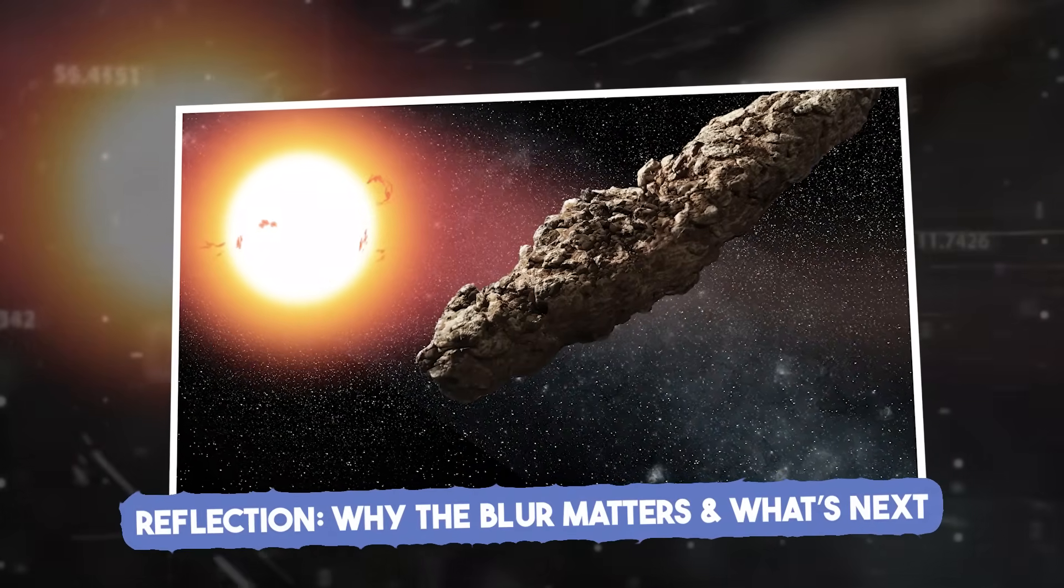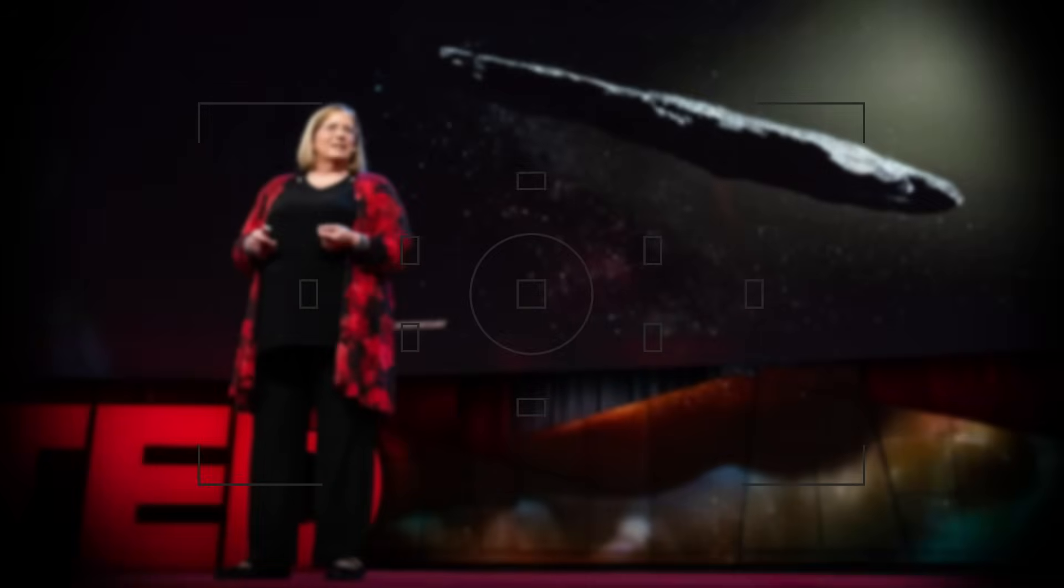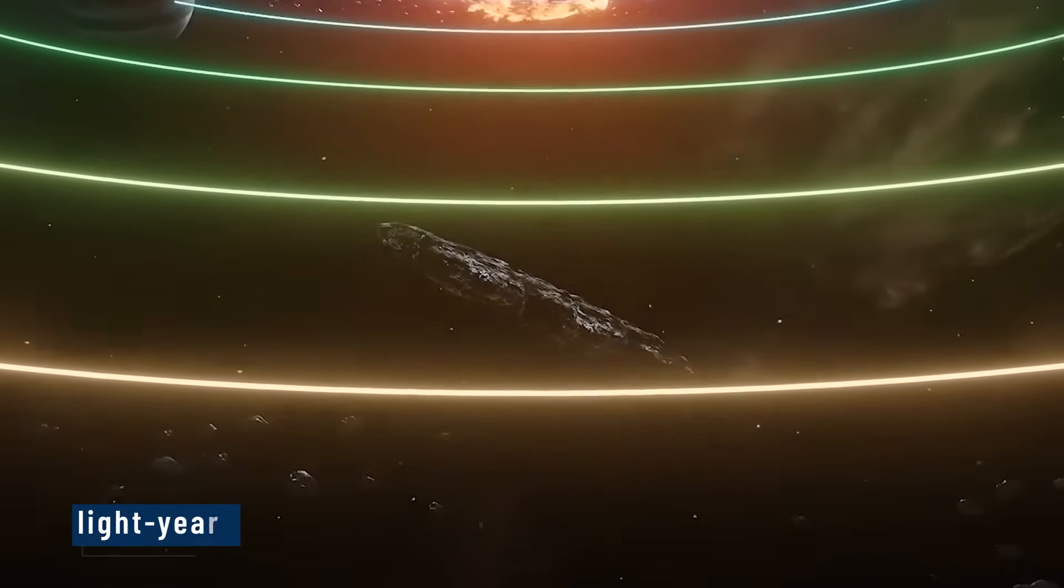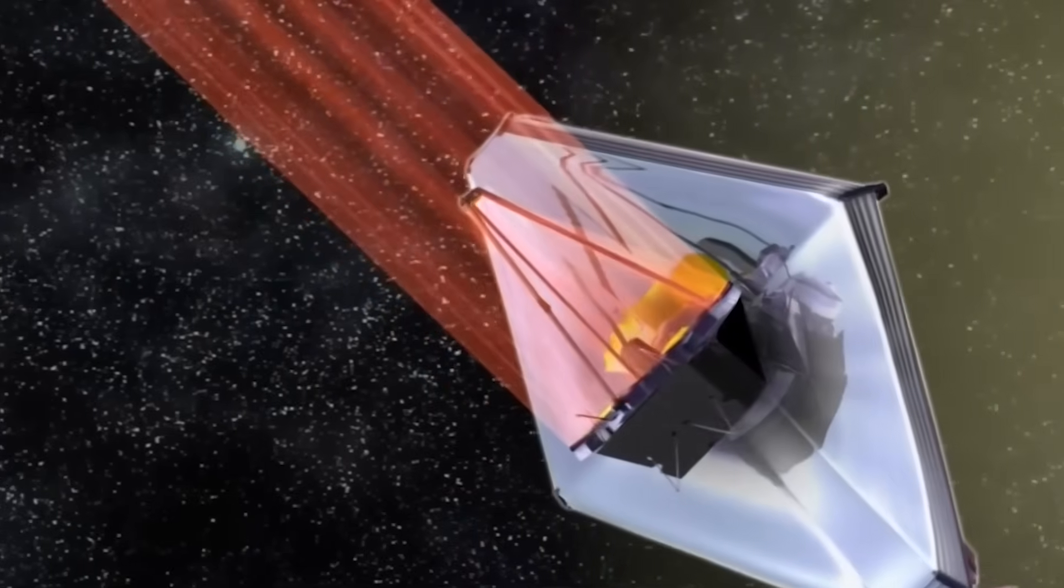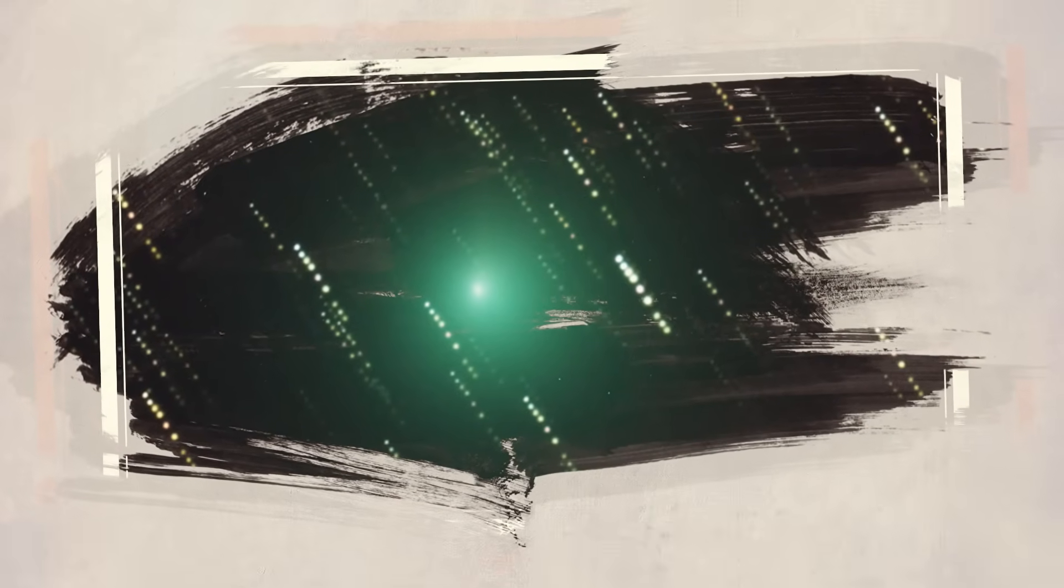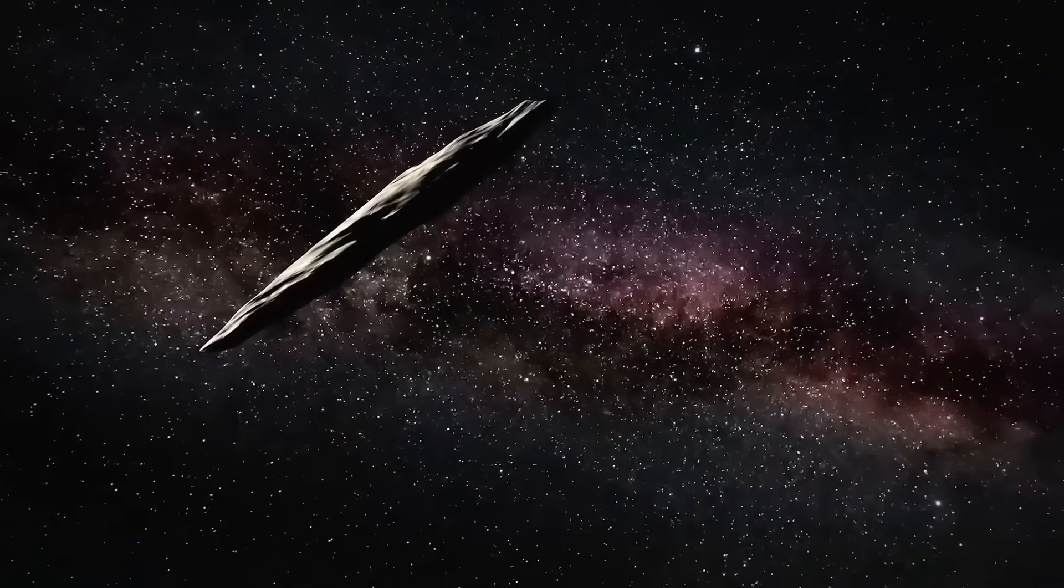Reflection. Why the blur matters and what's next. The image of 3i/ATLAS isn't sharp. It's not colorful. It's a gray smear, frozen in motion. But that blur tells us more than a crystal clear photo ever could. Inside that faint streak lies trajectory, spin, reflectivity, age, and composition. It's light that traveled across light years, touched by no star until ours. And it won't be back. 3i/ATLAS is on a hyperbolic escape path, leaving our solar system forever. The moment to see it, to understand it, is now or never. That's why this image matters. Because sometimes the clearest picture isn't the sharpest. It's the one that gives us the most physics. The most story.